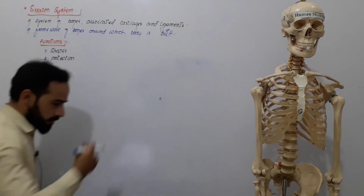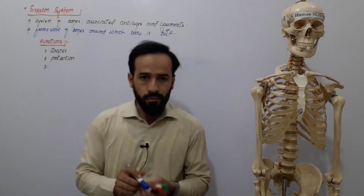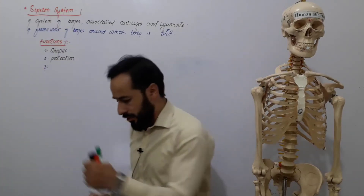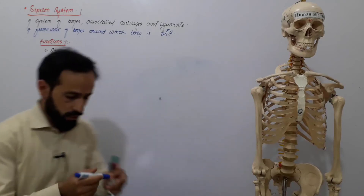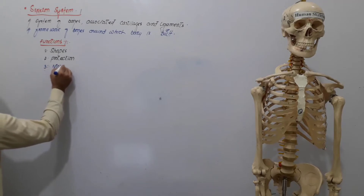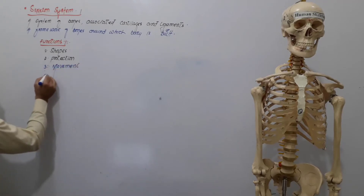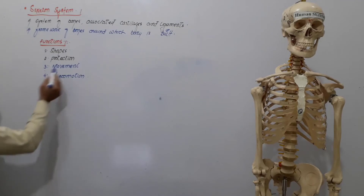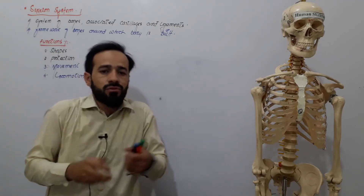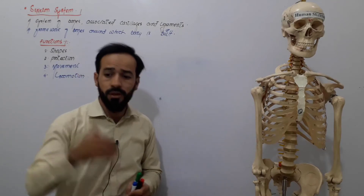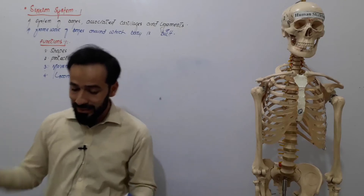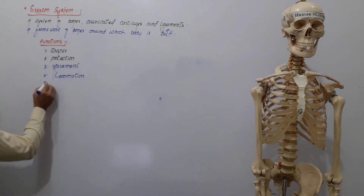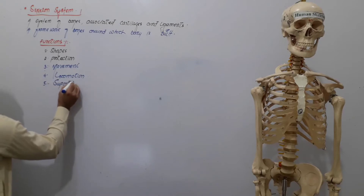The next function is movement and locomotion. Movement refers to actions performed while staying in place, whereas locomotion means changing your location. The skeletal system helps in both movement and locomotion. For example, gesturing while standing is movement, but walking from one place to another is locomotion.